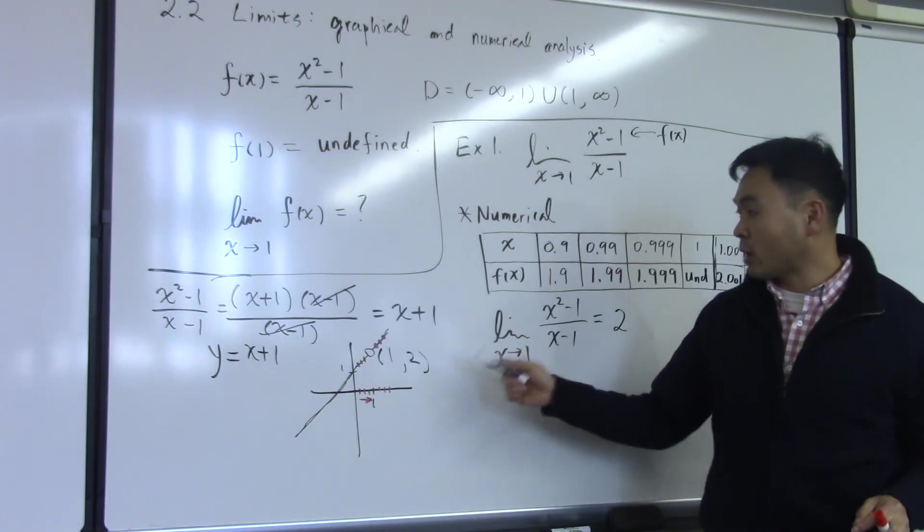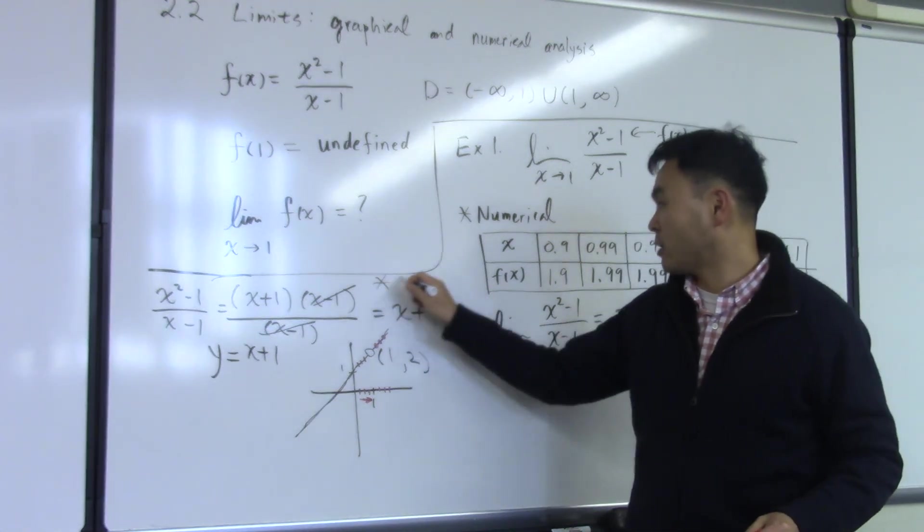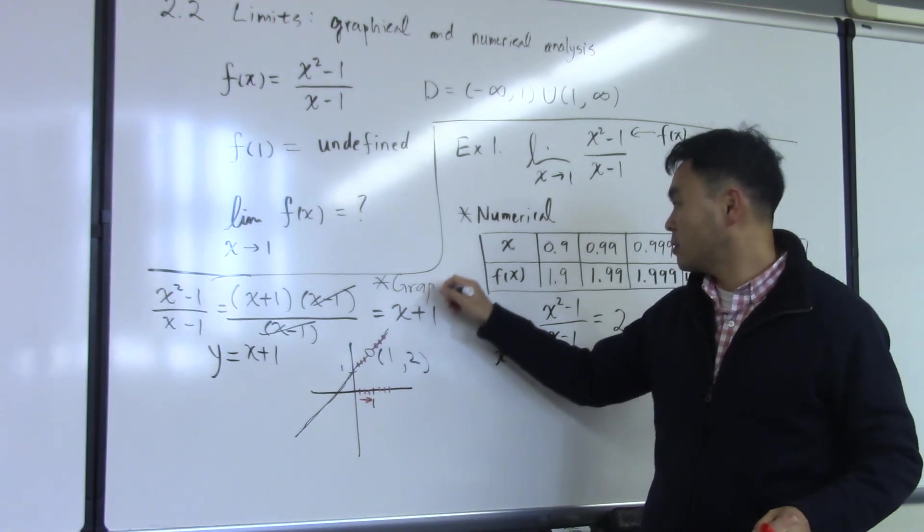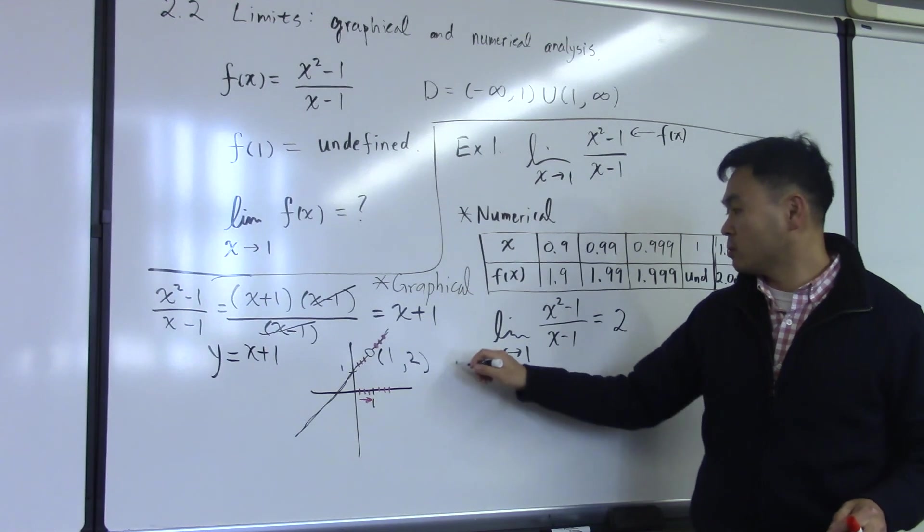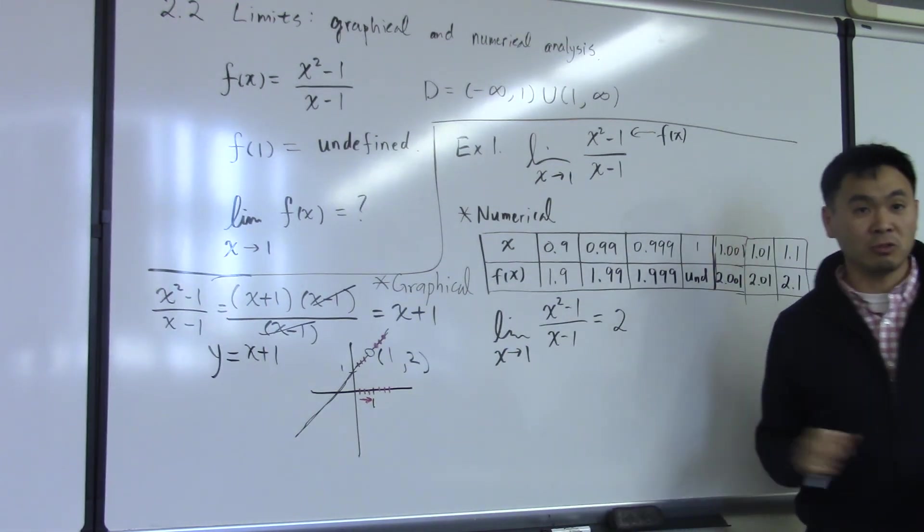So again, graphically, this should be named graphically. Graphically, we get the same conclusion that this limit should be 2.